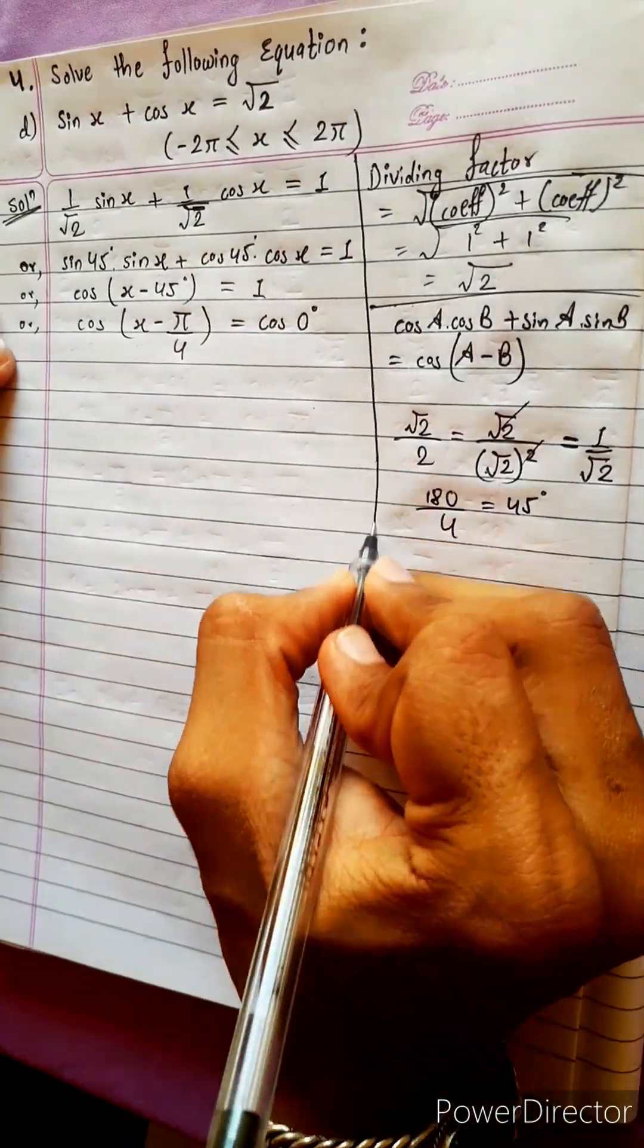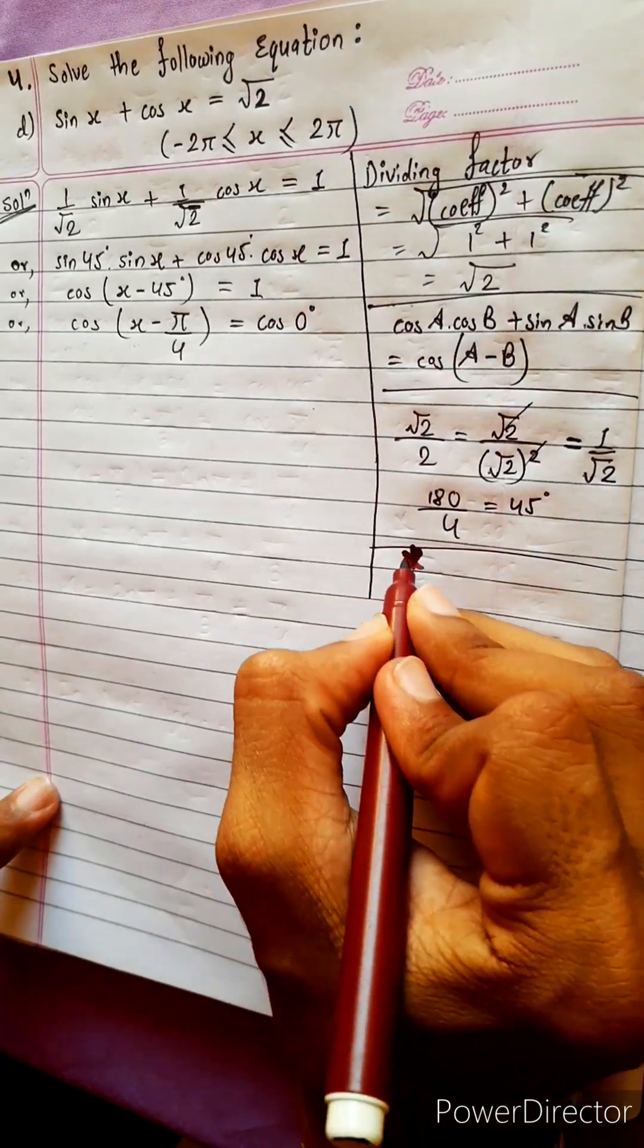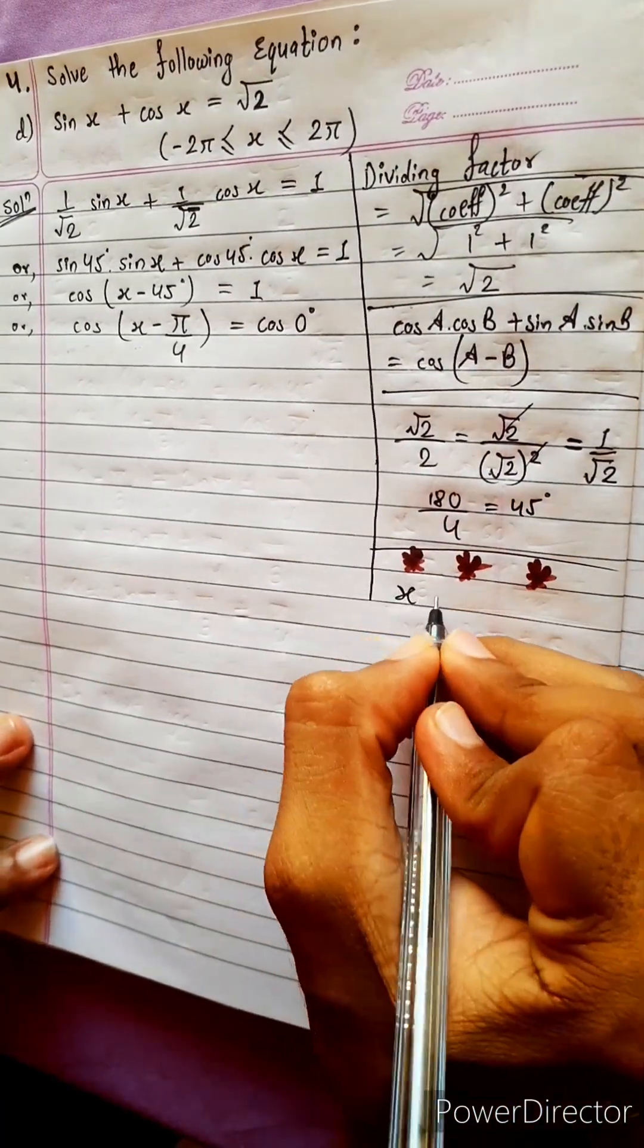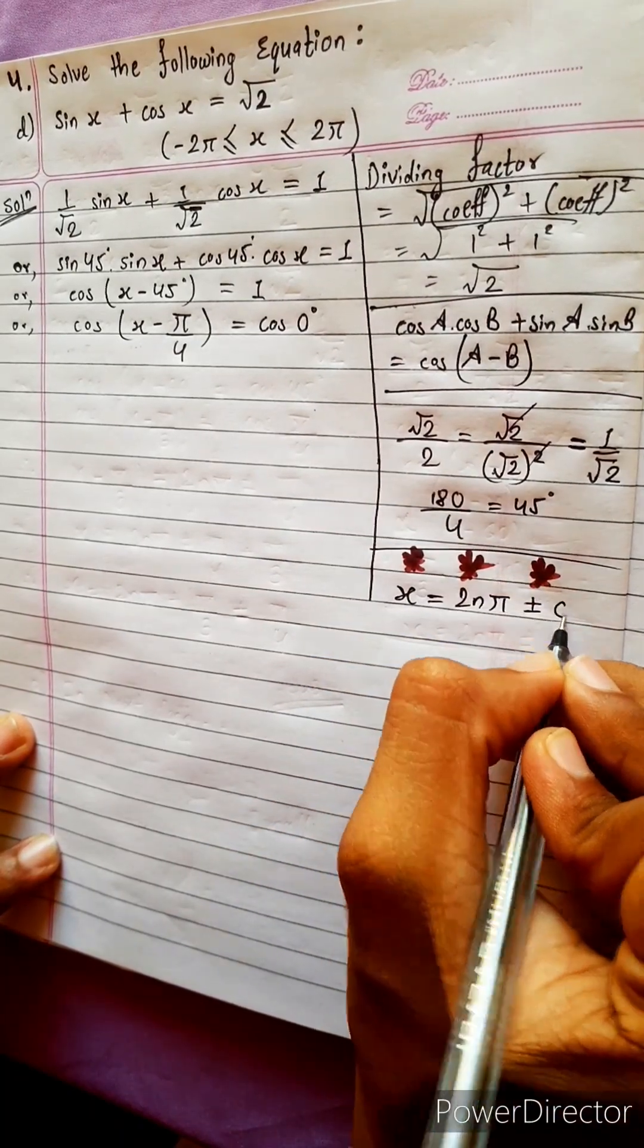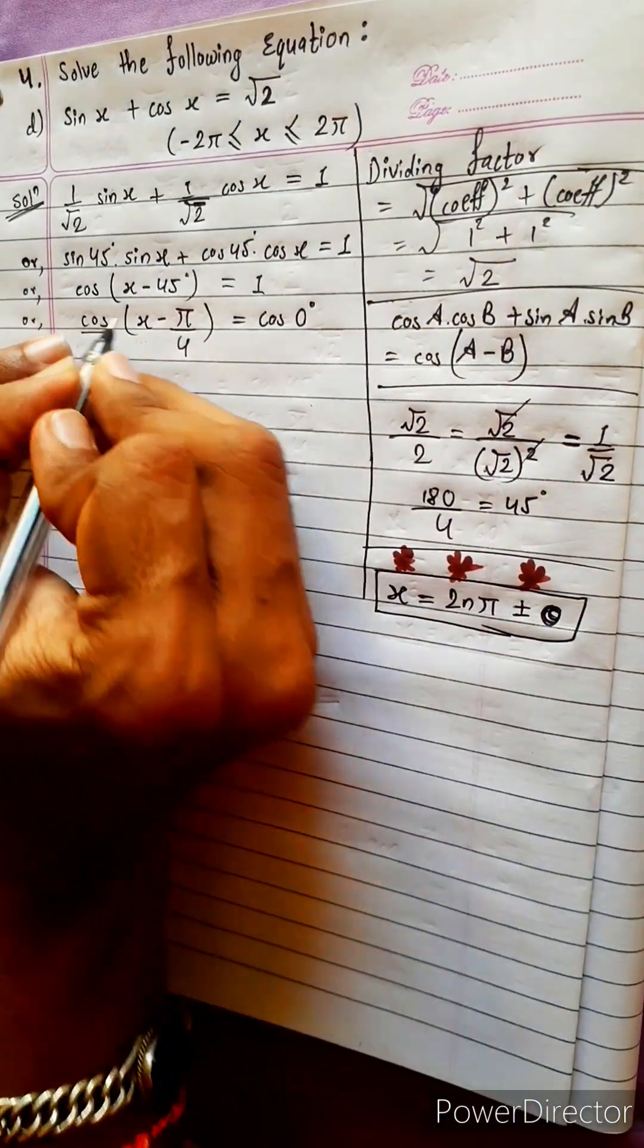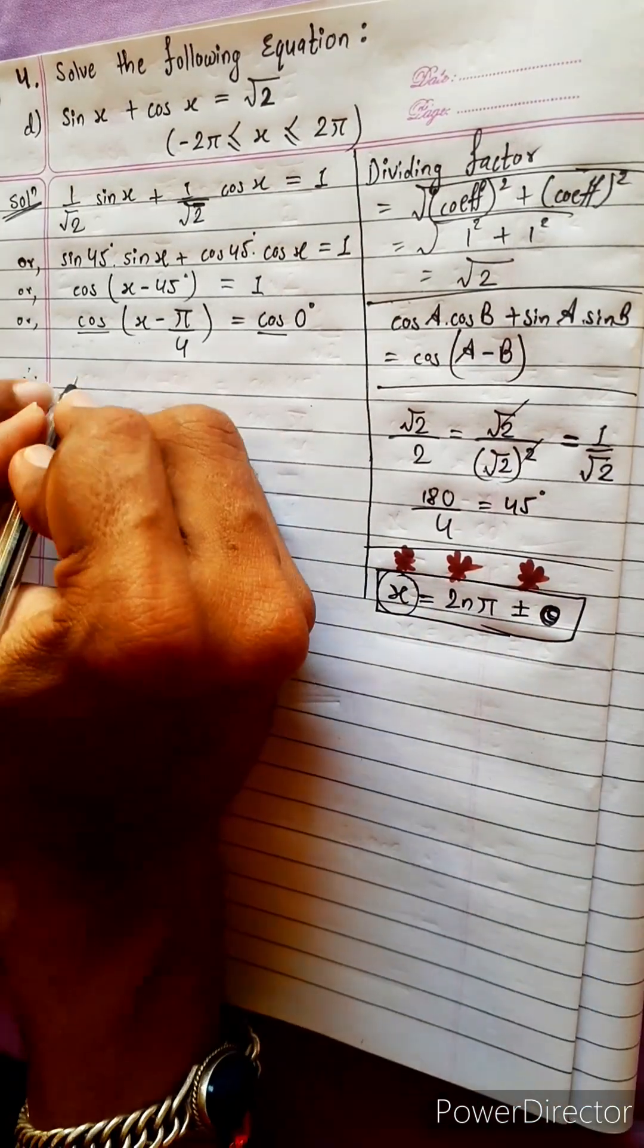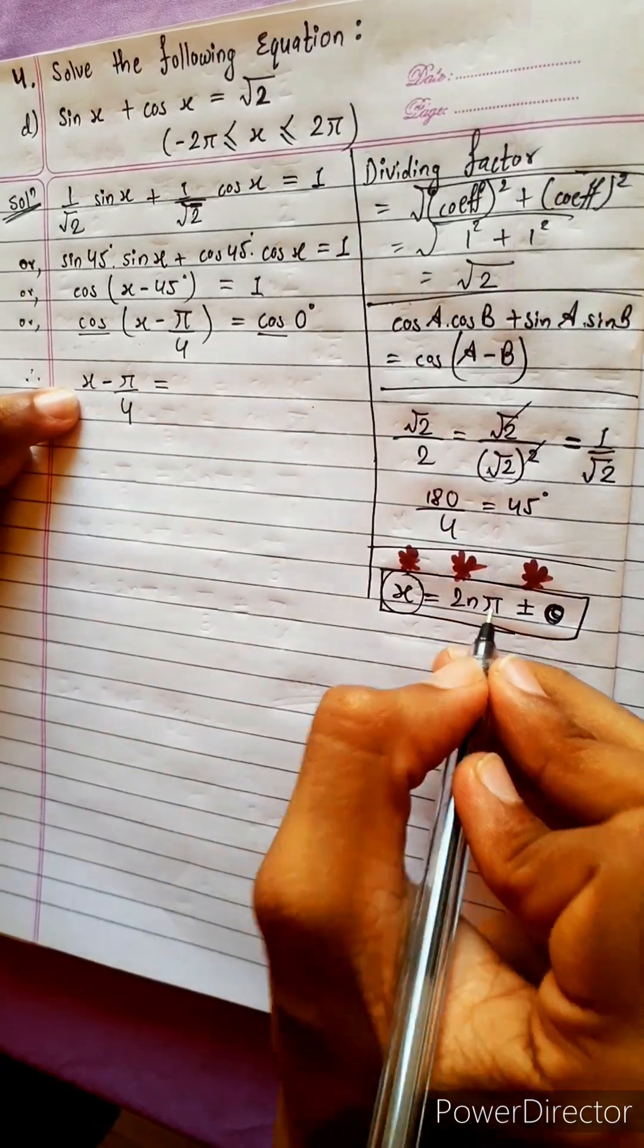Now there is one formula. This formula is very, very important. The formula which I am going to write here, that is x equals to 2n pi plus minus theta. Theta means angle. Let's use this formula. Here cos, cos, cos, it will be cancelled. Therefore x means, x means whatever we have got in left side. Everything is x. Pi by 4.